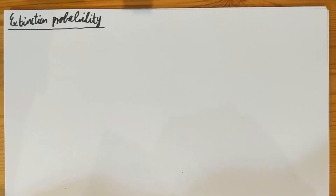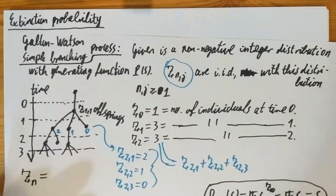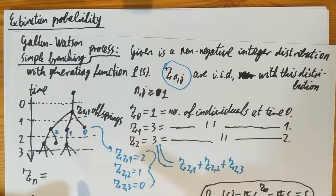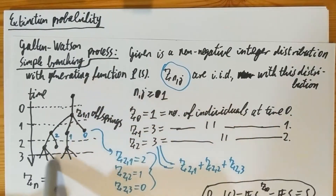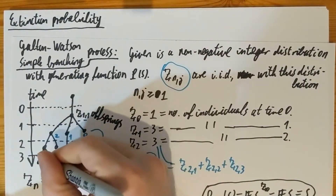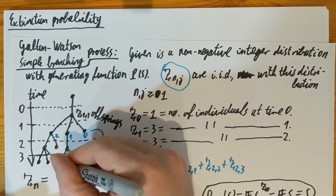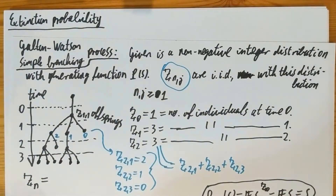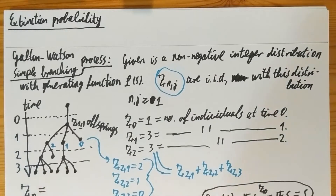We are going to calculate the probability of the Galton-Watson process ever dying out in this video. In the previous video, we defined the Galton-Watson process, or simple branching process, and now we want to ask the question: what is the probability that this process terminates? What is the probability that at some point all the amoeba decide to stop and not have any offsprings? For example, at time 4, there is nobody left, and then the whole process dies out.